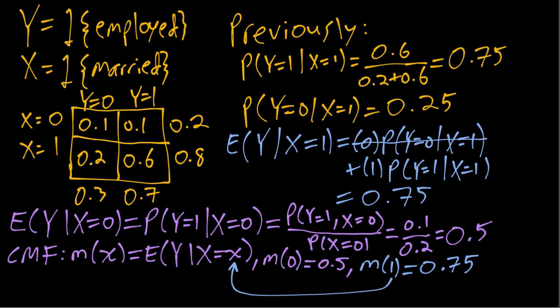And m of one is the value from before, 0.75, where we were plugging in one for little x. In other words, we were conditioning on X equals one, or in this example, looking at the married subpopulation.